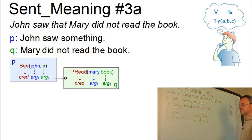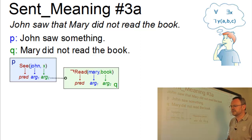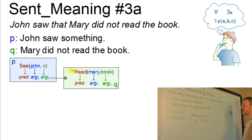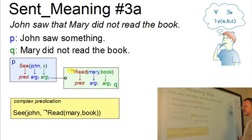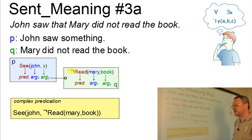Q can be converted into a second predication, again with the two-place predicate 'read' and the two arguments Mary and book. Now the predicate itself is negative — Mary did not read the book — so here we have the negative connective. As a result we have a complex predication of the type P and not-Q, with C taking John as first argument and 'not read Mary book' as the second argument.